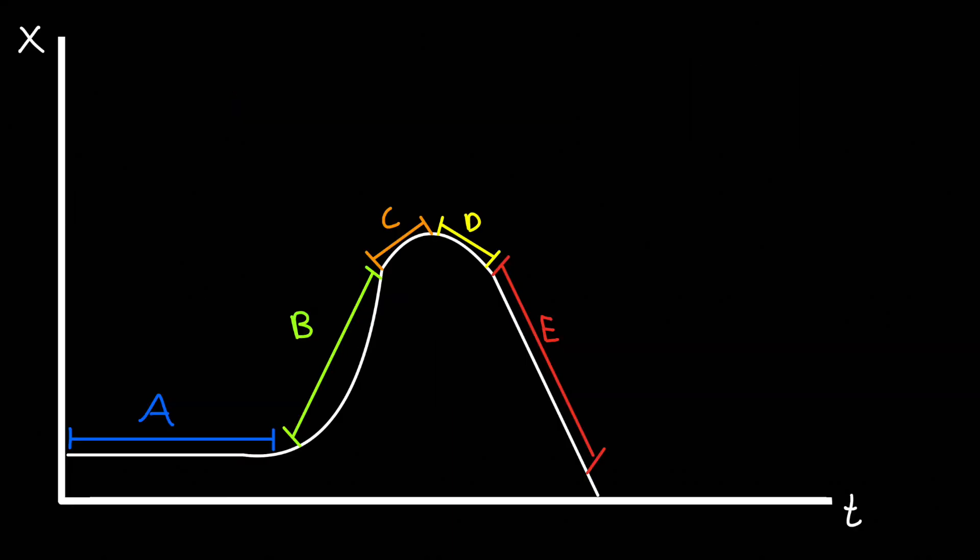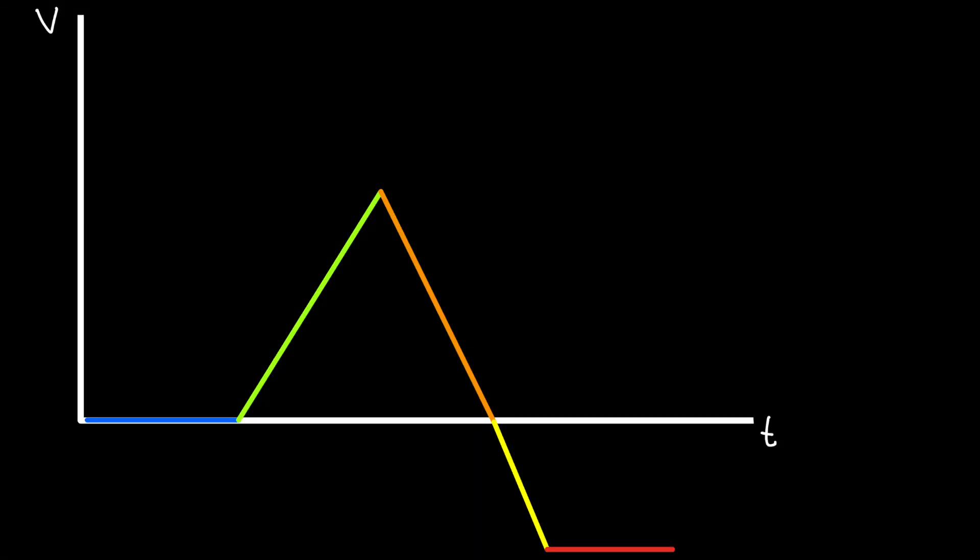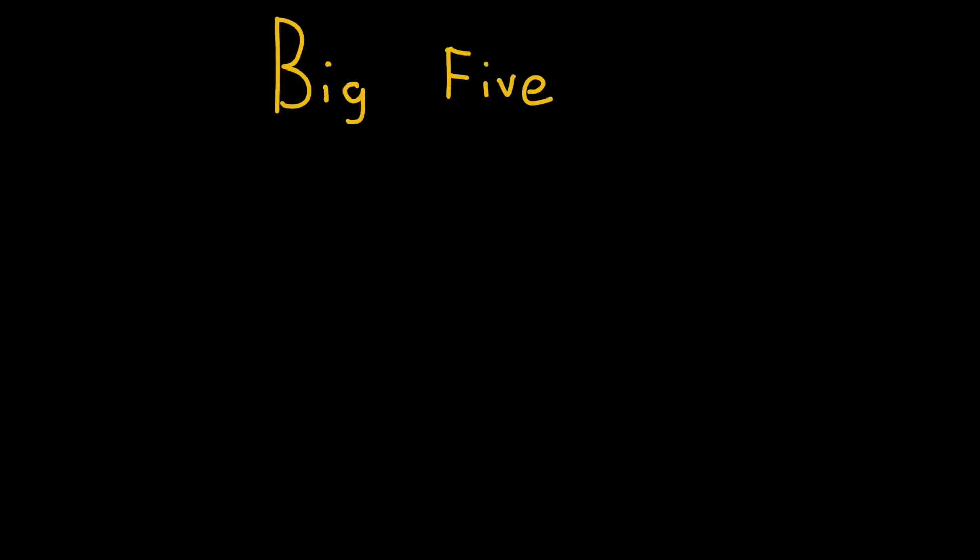Let's test our knowledge. I have illustrated a position versus time graph and I want you to convert it to a velocity versus time graph. Pause this video and try to solve it on your own. Here's what your velocity versus time graph should look like. Now let's move on to kinematics in one dimension.